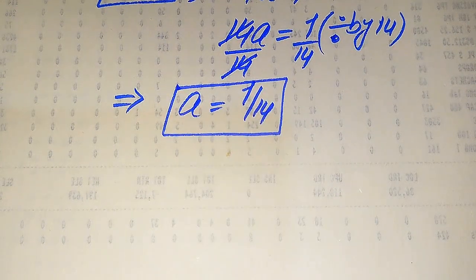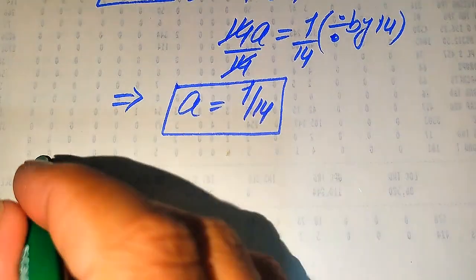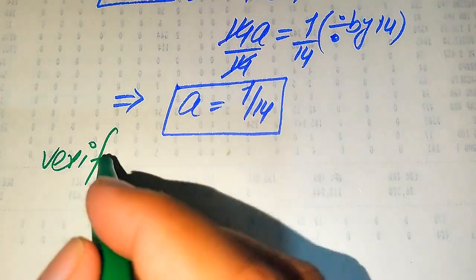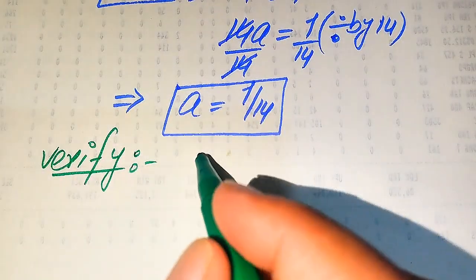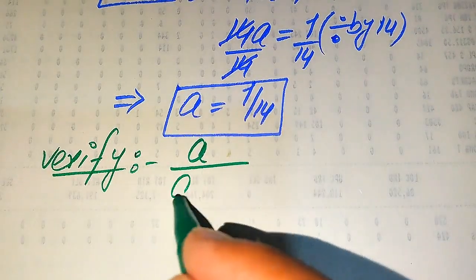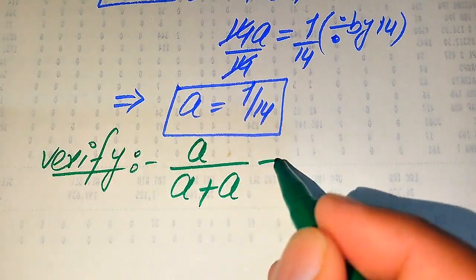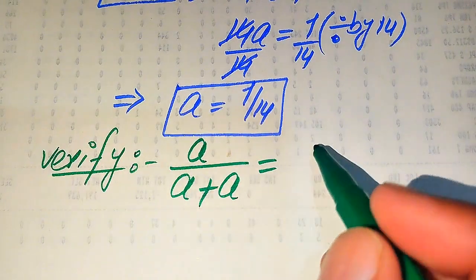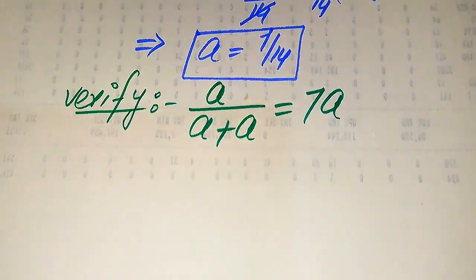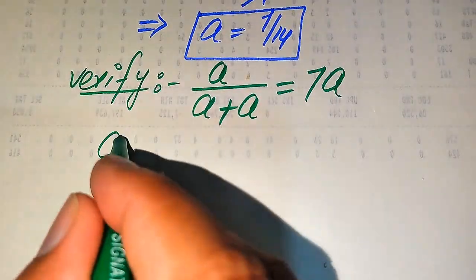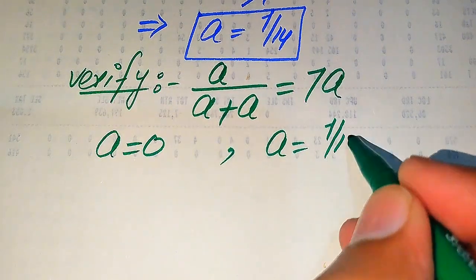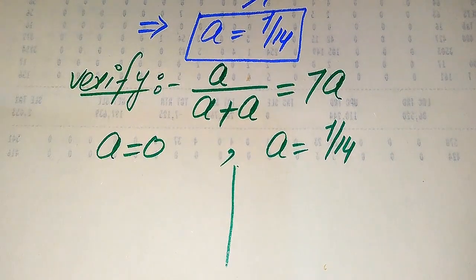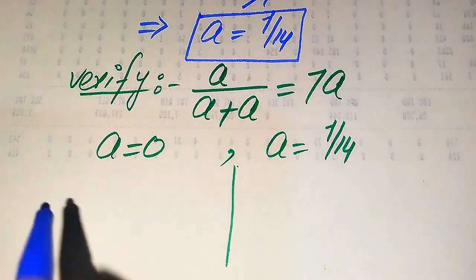We have two values of a and now we need to verify whether both values are solutions or if one is an extraneous root. For verification, we copy down the given equation: a divided by a plus a equals seven a. On one side we verify a equals zero, and on the other side we verify a equals 1 divided by 14.